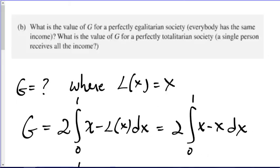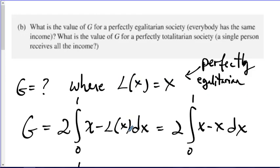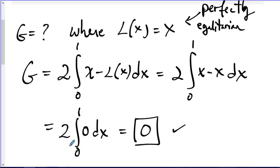What's the value of G in a perfectly egalitarian society where everybody has the same income? That would be this case where L of X is equal to X. So if L of X is actually X, in my definition or formula for the Gini index, I get just X minus X, and that's 0, and so that integral is 0.